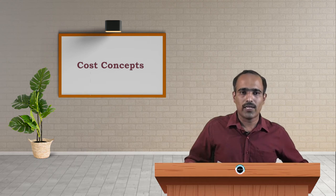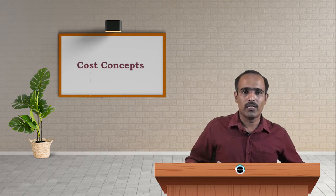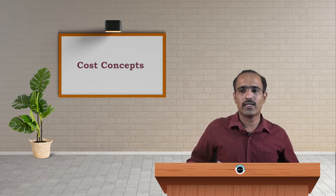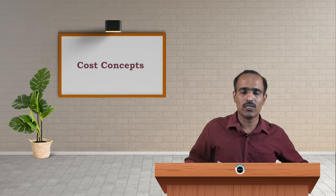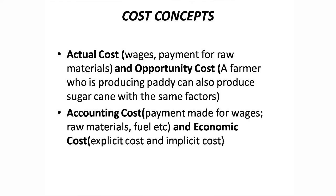The types of cost are given under two overlapping categories. One category of cost is the actual cost and the opportunity cost, and another category of cost is the accounting cost and the economic cost.